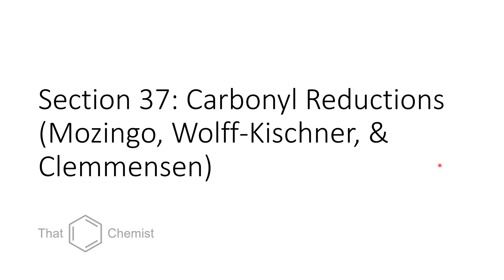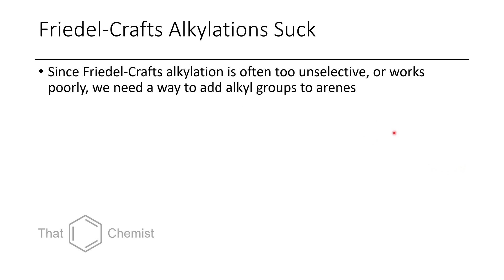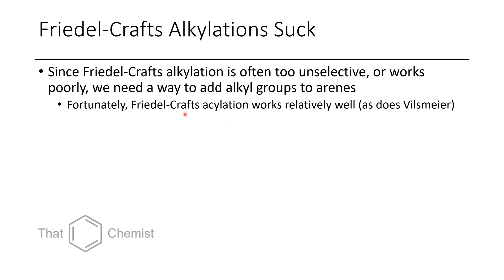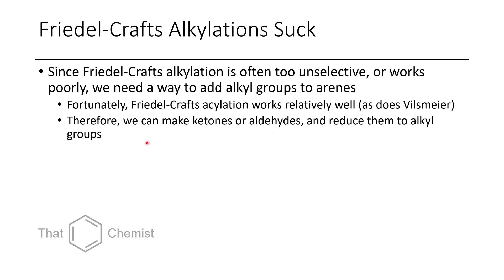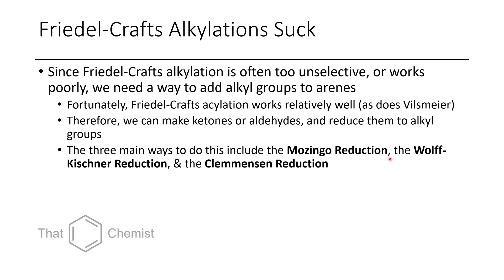Now let's get into today's material: carbonyl reductions using the Mozingo reduction, the Wolff-Kishner reduction, and the Clemmensen reduction. As you may recall, Friedel-Crafts alkylation is problematic due to harsh catalysts and frequent carbocation rearrangements. However, Friedel-Crafts acylation and Vilsmeyer — which is rather mild — work well. So you can synthesize a ketone or aldehyde and then reduce those groups to alkyl groups, achieving net alkylation through acylation first.